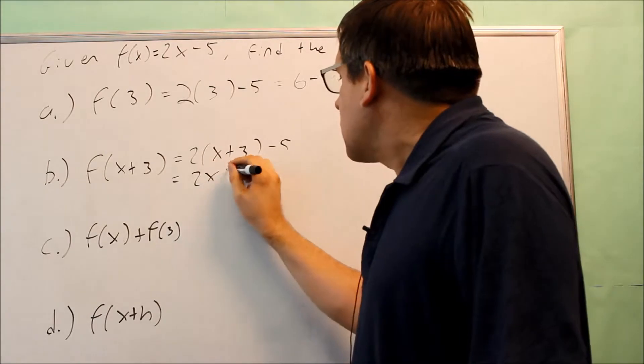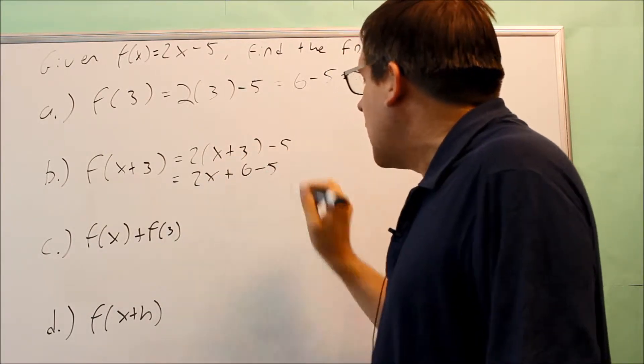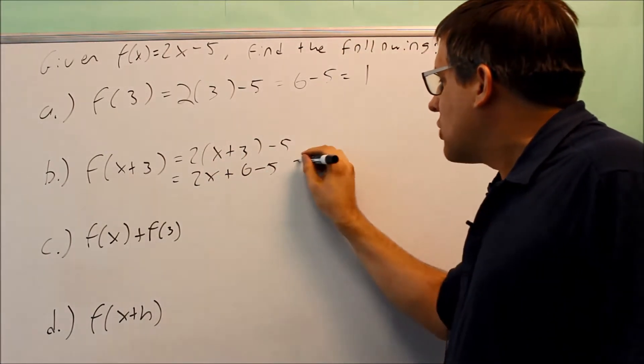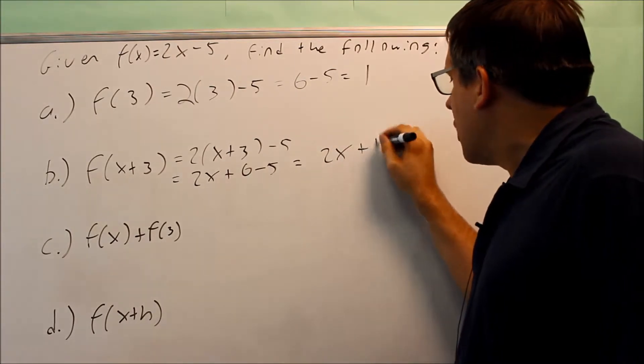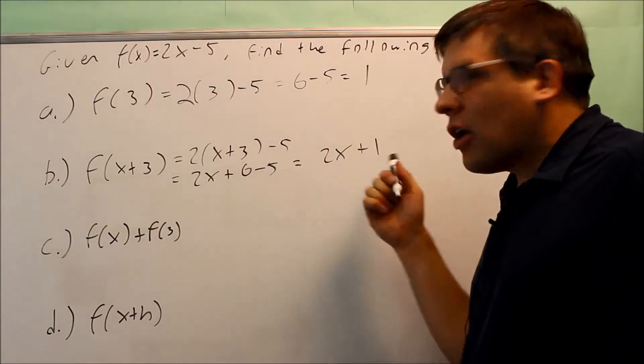Now I want to do some simplifying on this. We're going to distribute the 2. I get 2x + 6 - 5, and I just need to simplify this. I get 2x + 1, and that's as far as I can go.